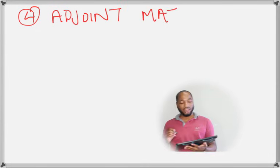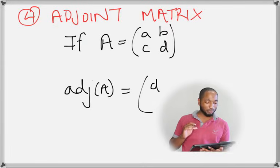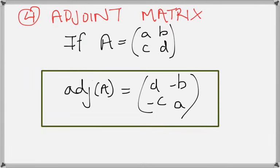For the adjoint matrix — the next important step before finding the inverse — if A equals [a b; c d], the adjoint of A equals [d, -b; -c, a]. In this formula we are switching around a and d, and we are switching the signs on b and c.